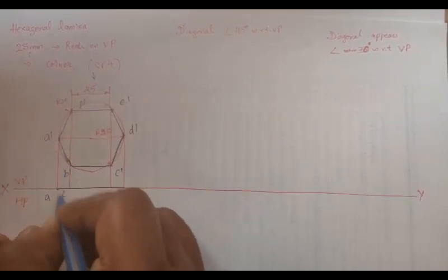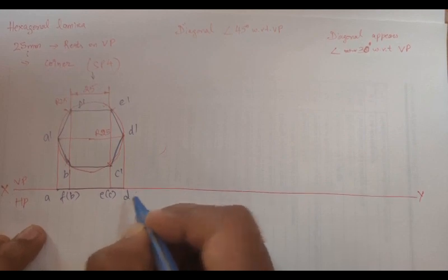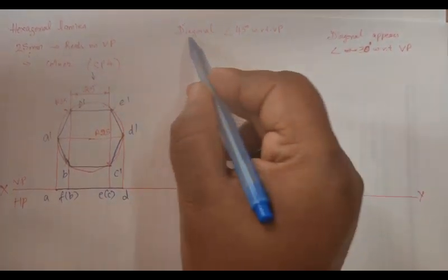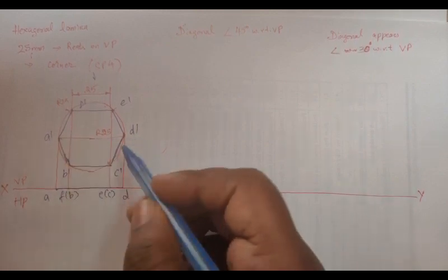The diagonal is going to be inclined 45 degrees with respect to VP. If it is on VP, you are going to see the inclination with respect to VP. That is nothing but A dash D dash. In the top, it is AD. AD is inclined 45 degrees.